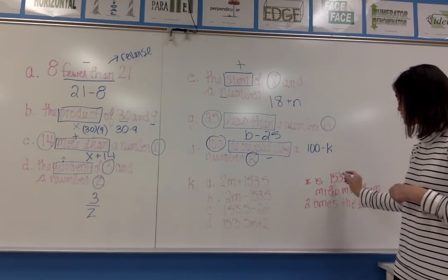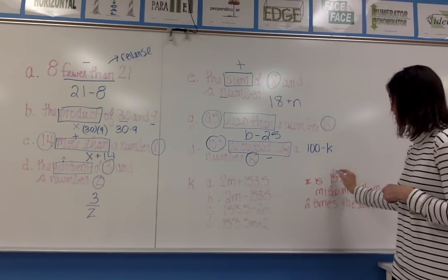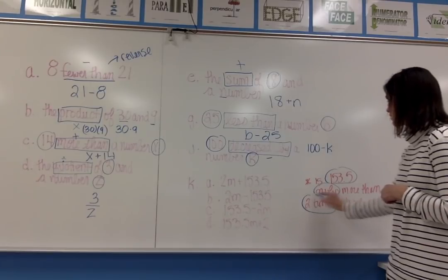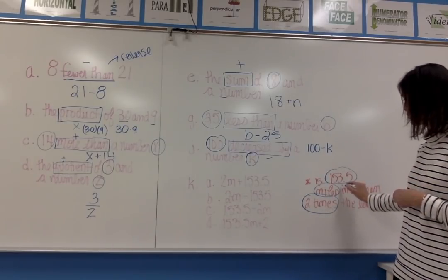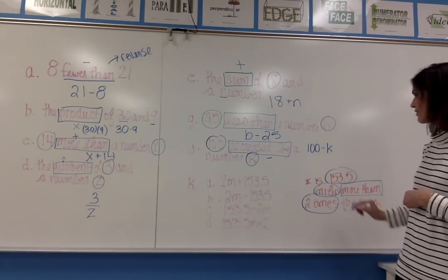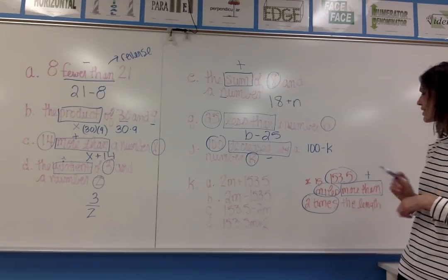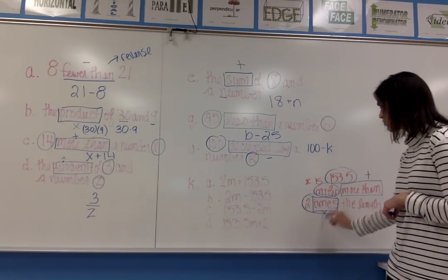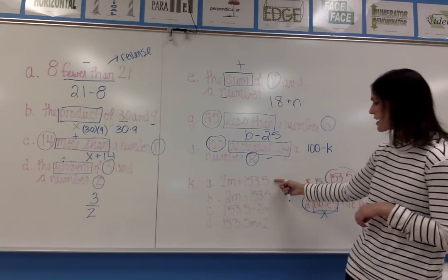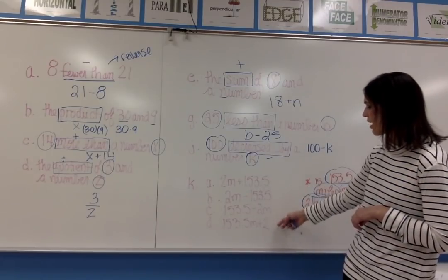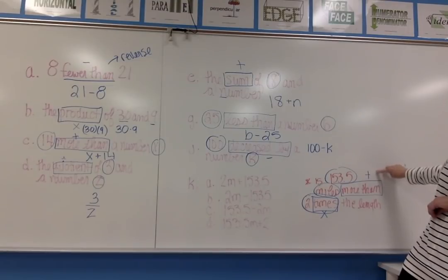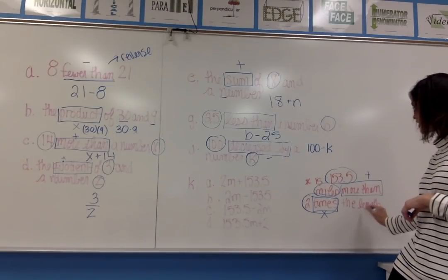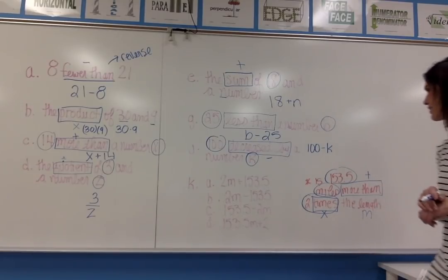I have 153.5 miles and two times as my numbers. The clue words are more than and times—more than means add, times means multiply. Looking at my expression options, I need one with addition and one that takes two times the length, represented by M. More than means to add, so I can eliminate B and C since they're subtraction. More than also means reverse the order, so 153.5 comes second and 2M comes first.